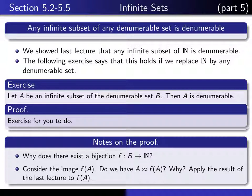And once you realize that, well now f of A is a subset of the natural numbers. Since it has the same cardinality as A, then it must be infinite. So now we can just simply apply this result here to deduce that f of A is necessarily denumerable, and then you just relate f of A back to A to deduce that A must be denumerable. So that's the idea.